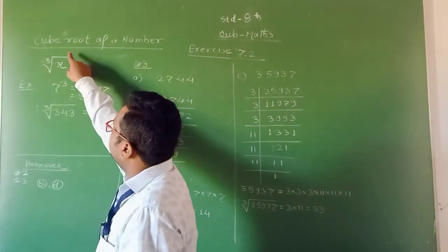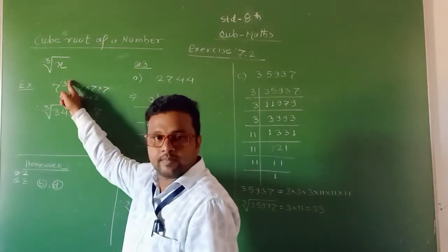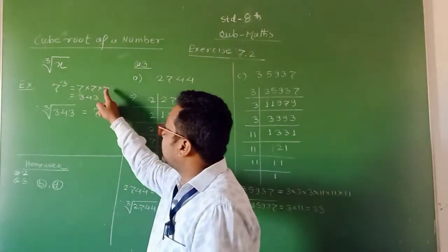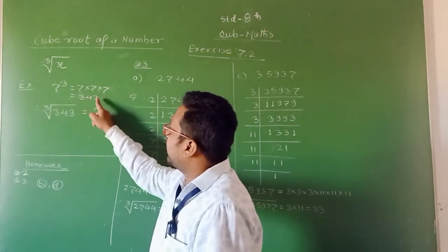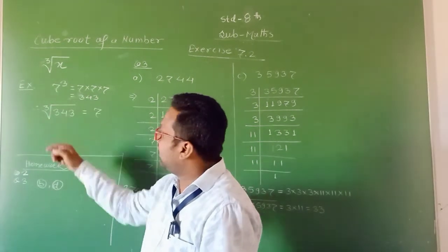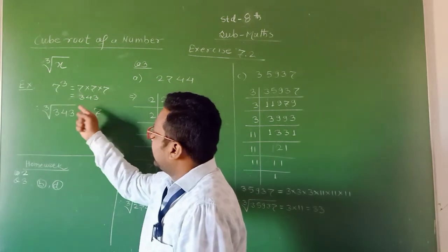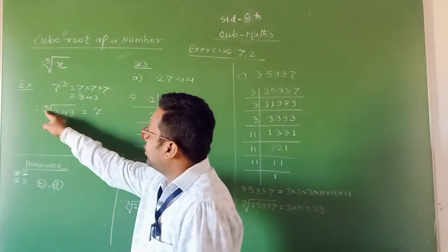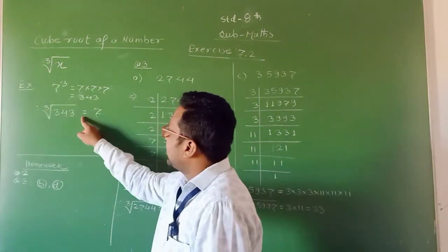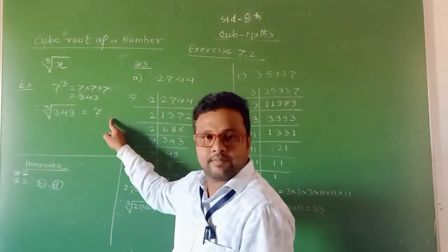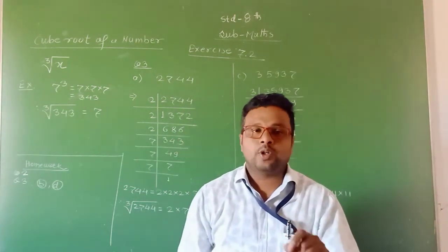This represents the cube of the given number. For example, 7 cube — that is 7 into 7 into 7 — gives 343. So 343 is the cube of 7. If you have to find out the cube root of 343, we represent it as cube root of 343, equal to 7. I hope you understand the representation of cube root.